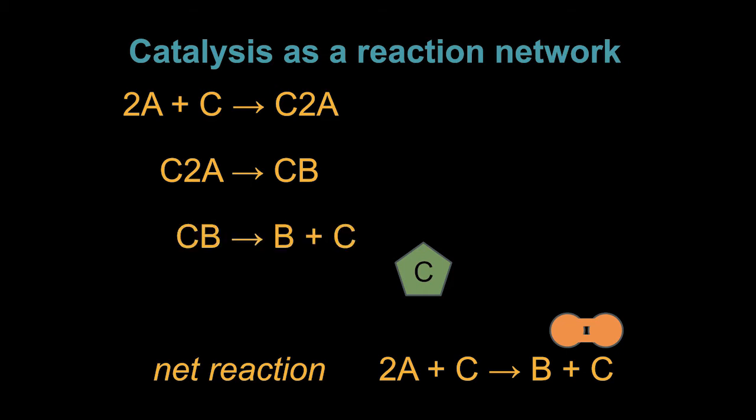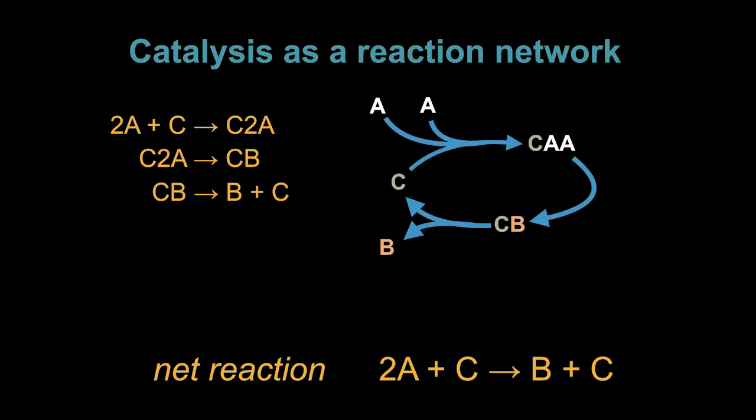This set of reaction steps forms a reaction network. A reaction network is simply a set of chemical reactions where the products of some form the reactants of others. There are many ways to draw them graphically as networks, but one of the simplest is this one, where the reactions are drawn as arrows that can either split or merge, depending on how many reactants and products there are. Each of these blue arrows corresponds to one of the reaction steps on the left. One thing to notice is that this network contains a cycle. This is because the catalyst particle gets returned after the sequence of reactions. So the presence of cycles in reaction networks is a common feature associated with catalysis. This is called a catalytic cycle.